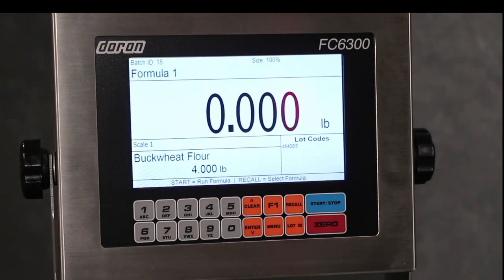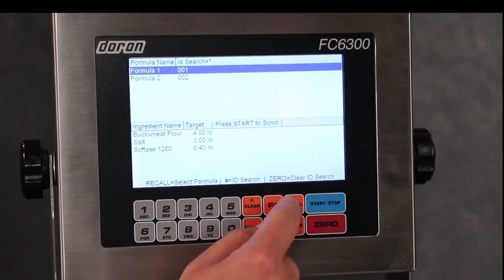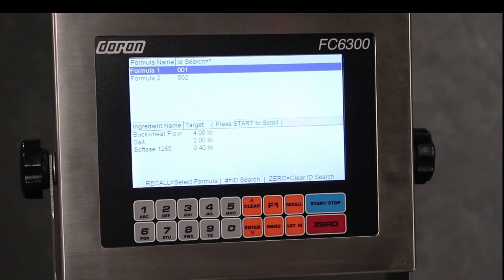Press the recall button to go to the formula selection screen. If there was more than one formula programmed in this scale, as you see here, the clear and enter buttons are used to scroll to the desired formula. Once I've found the formula that needs to be run, I press and release the recall button.